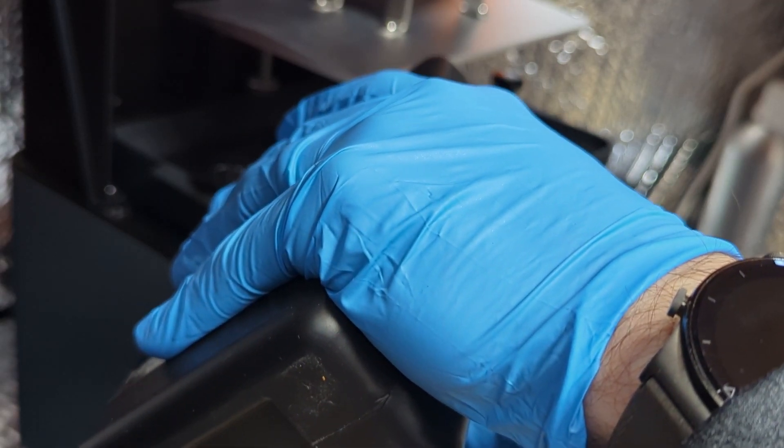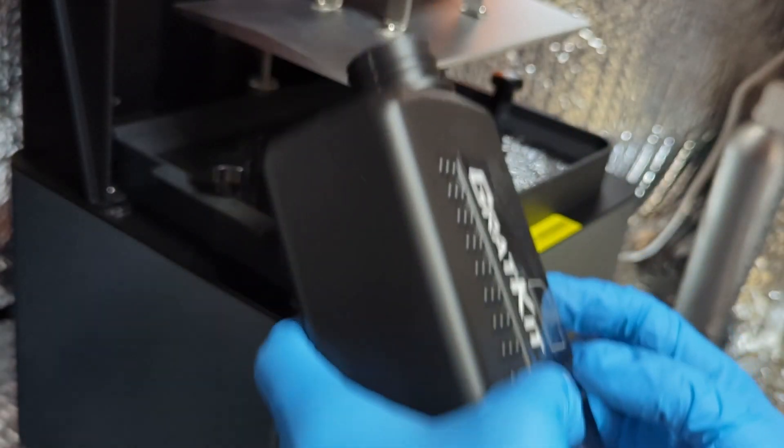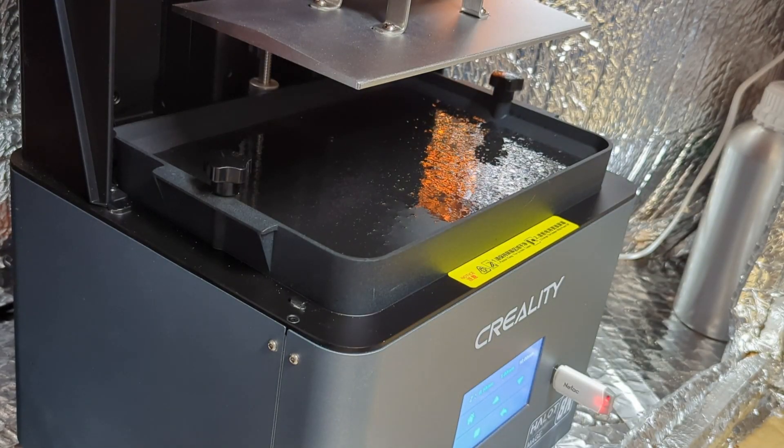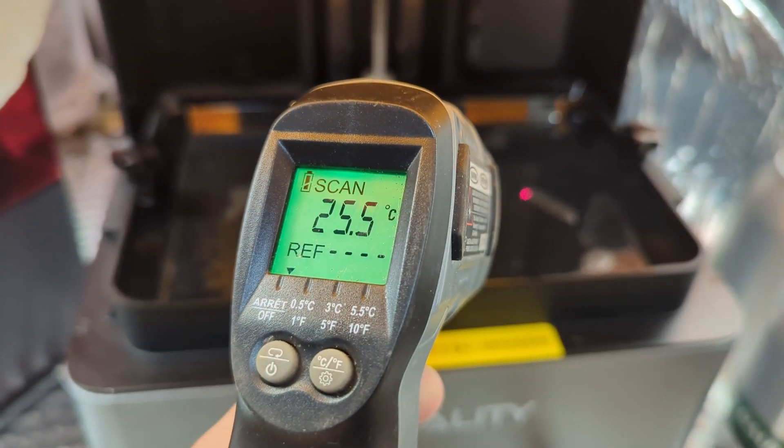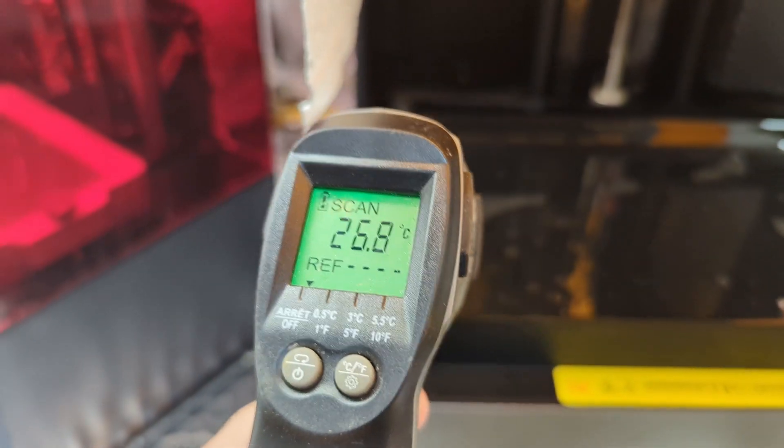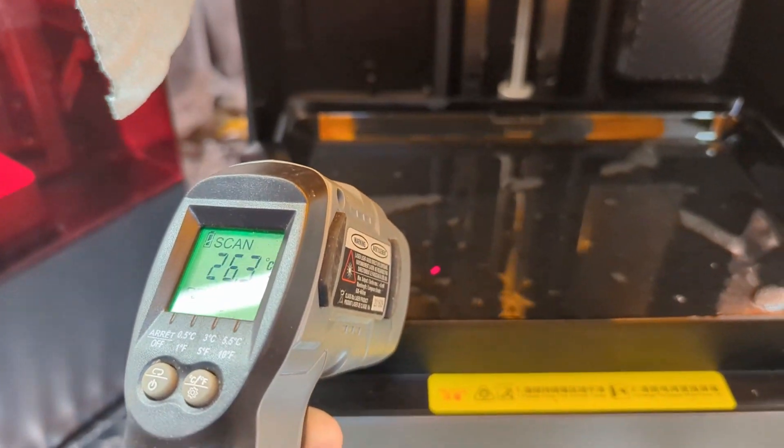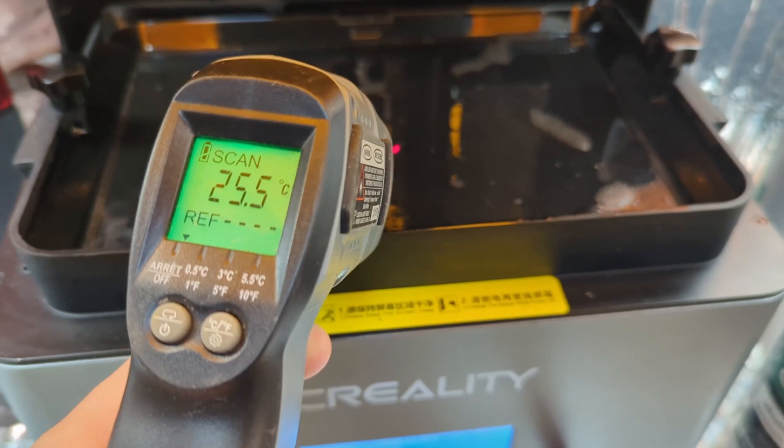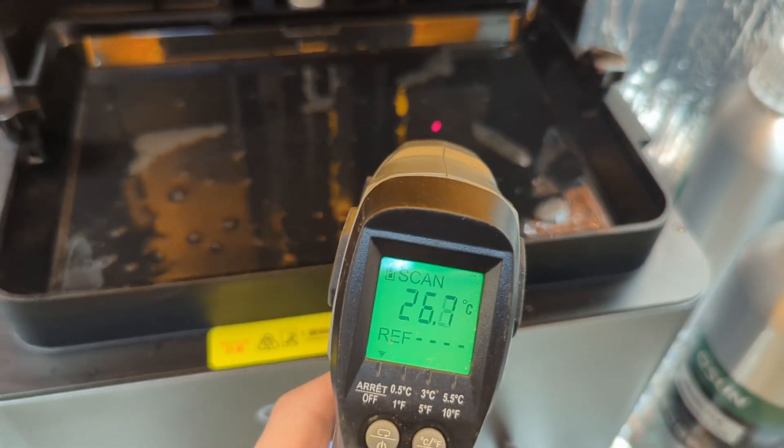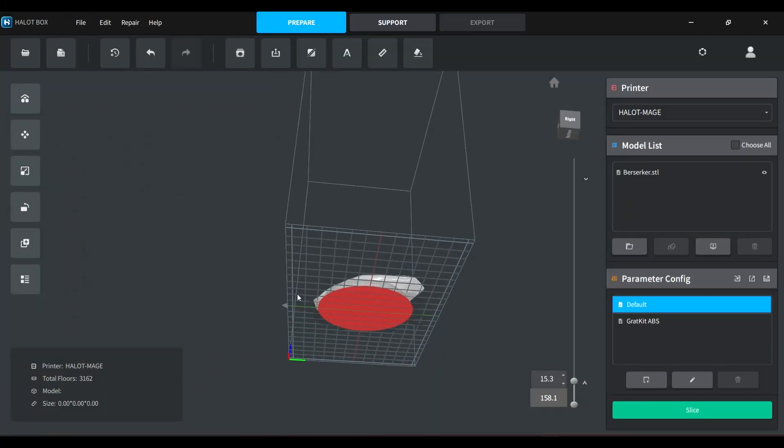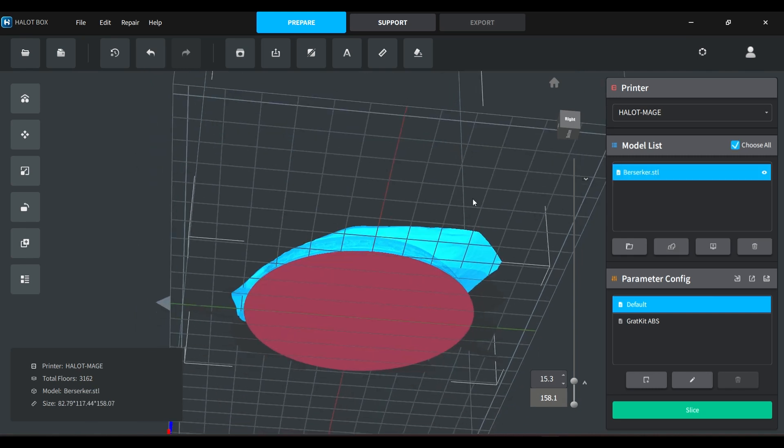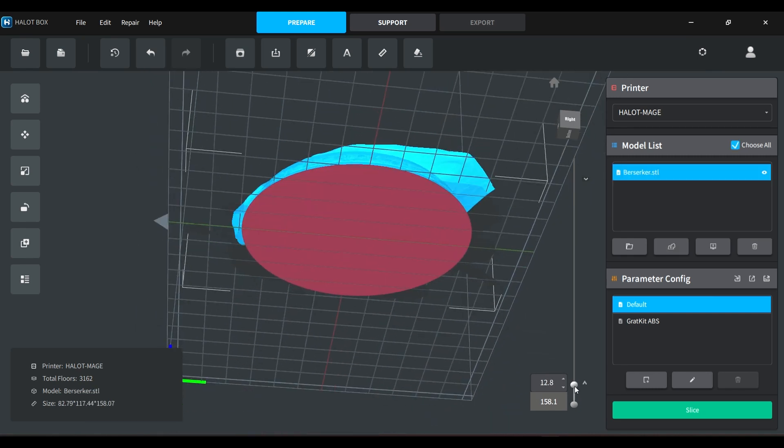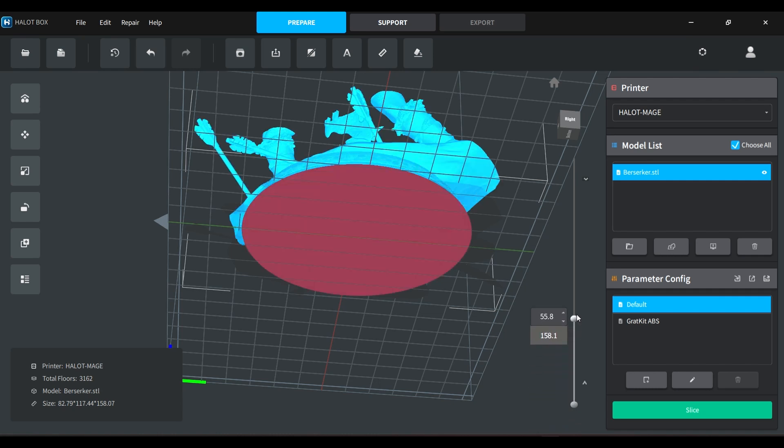Oh yeah, this resin is definitely thicker than what I'm used to. Before printing, my resin was around 25 or 26 degrees Celsius. And I would have liked it to be even hotter to increase its fluidity. The more viscous the resin is, the more chance that the first layer will not adhere to the build plate, especially when we have a print with large cross section.